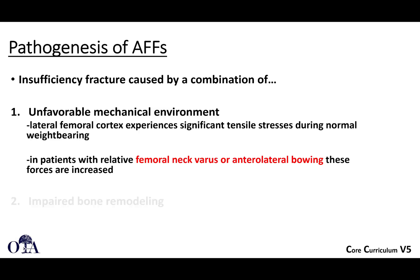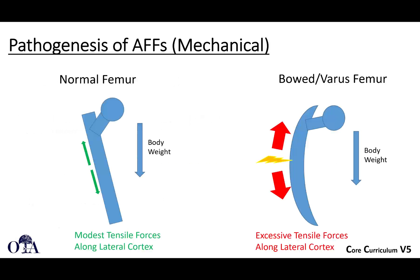Regarding the unfavorable mechanical environment: the lateral femoral cortex in humans experiences significant tensile stress during normal weight-bearing. But if you have relative femoral neck varus or anterolateral bowing, these forces are increased. Looking at the diagram — on the left you have a normal femur with high tensile forces along the lateral cortex in the subtrochanteric region. On the right, with bowing, you have even more tensile forces along that lateral cortex — it's a bit disproportionate, so you're somewhat predisposed.